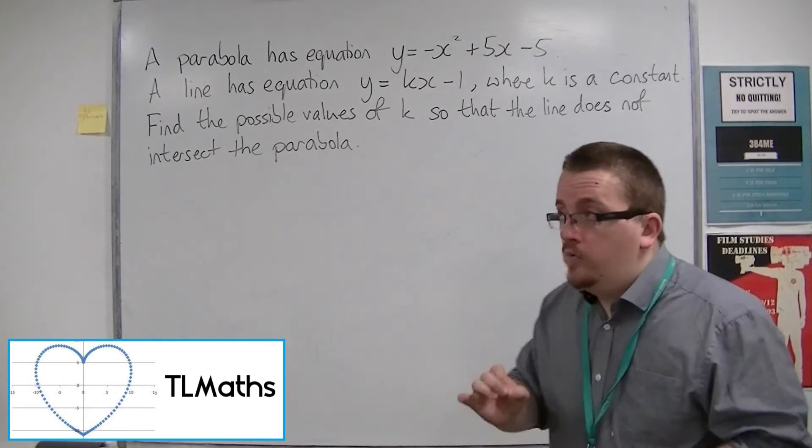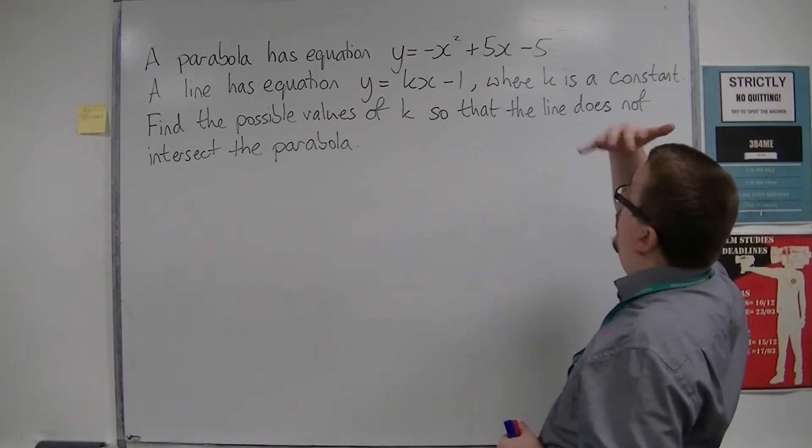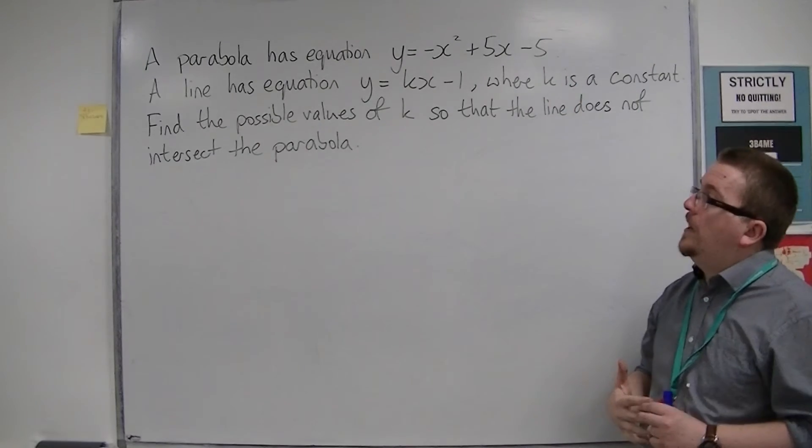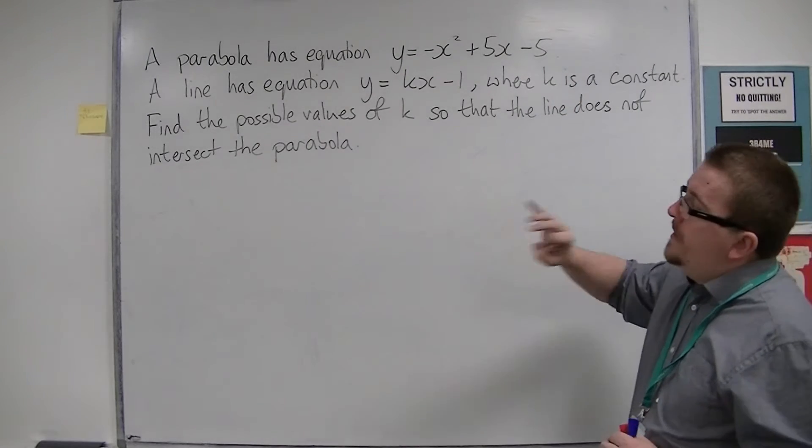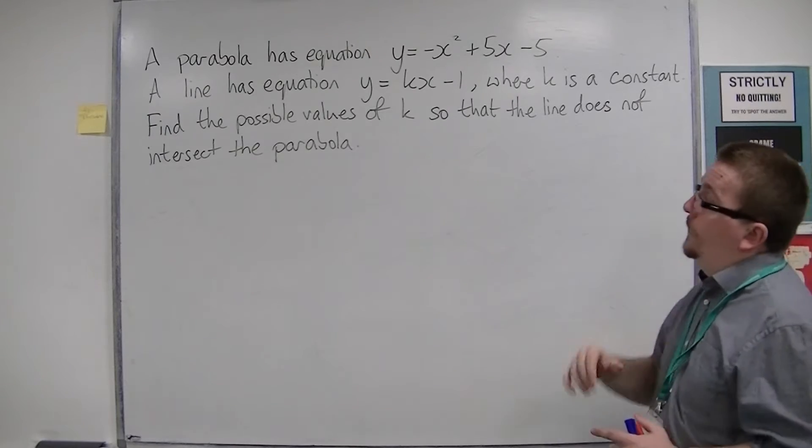Let's look at a particular problem. A parabola has the equation y equals minus x squared plus 5x minus 5. A line has the equation y equals kx minus 1, where k is a constant.